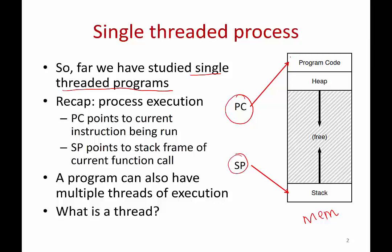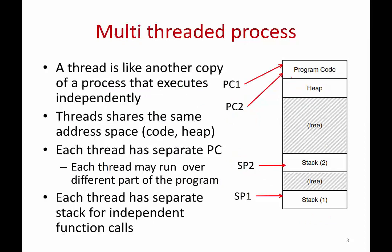A program can also have multiple threads of execution. In a multi-threaded program, you have multiple lines of execution through your code simultaneously. A thread is just like another copy of a process that executes on the same code. If your program has two threads, you are going to have two program counters — one pointing to some line of code executing here, the other pointing to some other line executing there. Both threads execute together at the same time on the same program. Threads share the address space, the same code, and the same heap. But each thread has a separate program counter, since different threads are running at different points of the program.